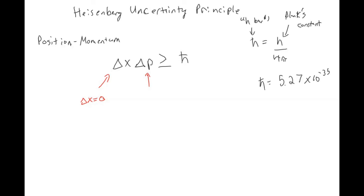It's going to increase. If I want to multiply something by zero and have it be bigger than zero, what does that number have to be? This has to go towards infinity. If I very precisely measure the position of something, I have no way of knowing how fast that thing is moving.